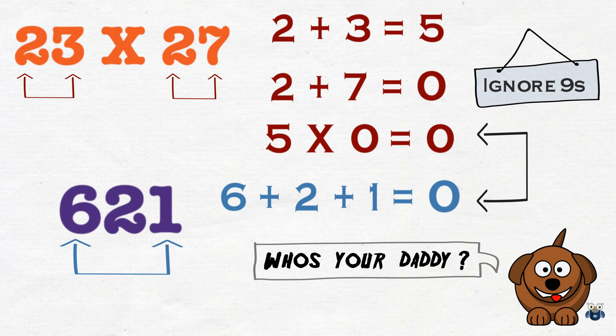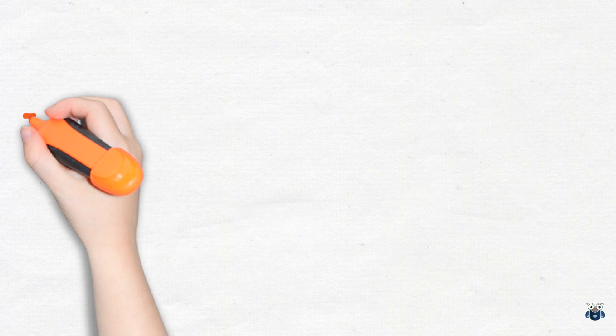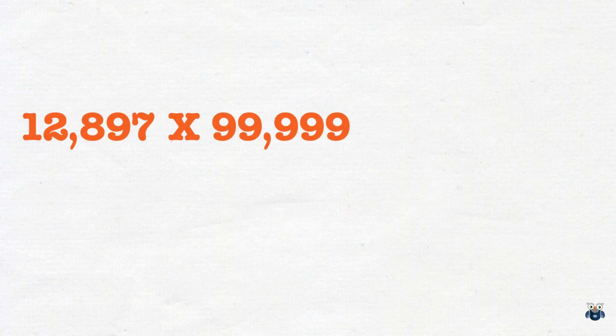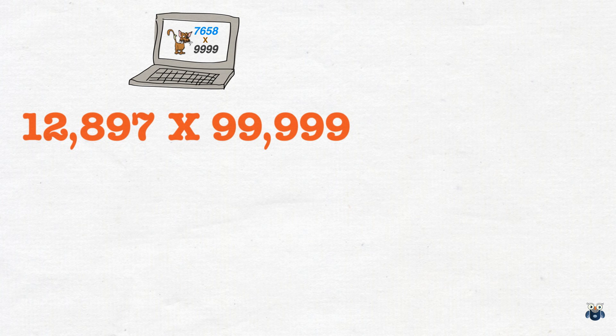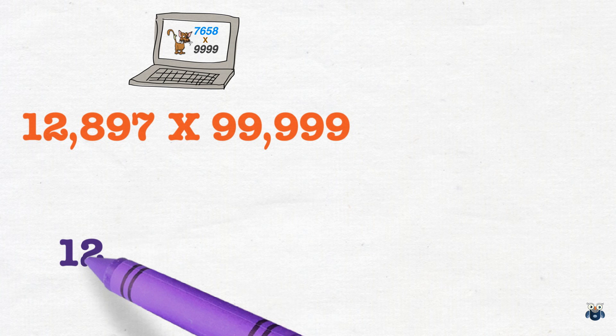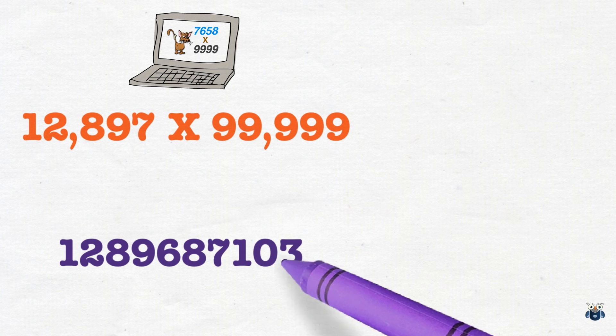Okay, I did not understand the first time. So, let's take another example. What is 12,897 times 99,999? If you watched one of our previous videos, you will know the answer in a few seconds. The answer is 1,289,687,103.